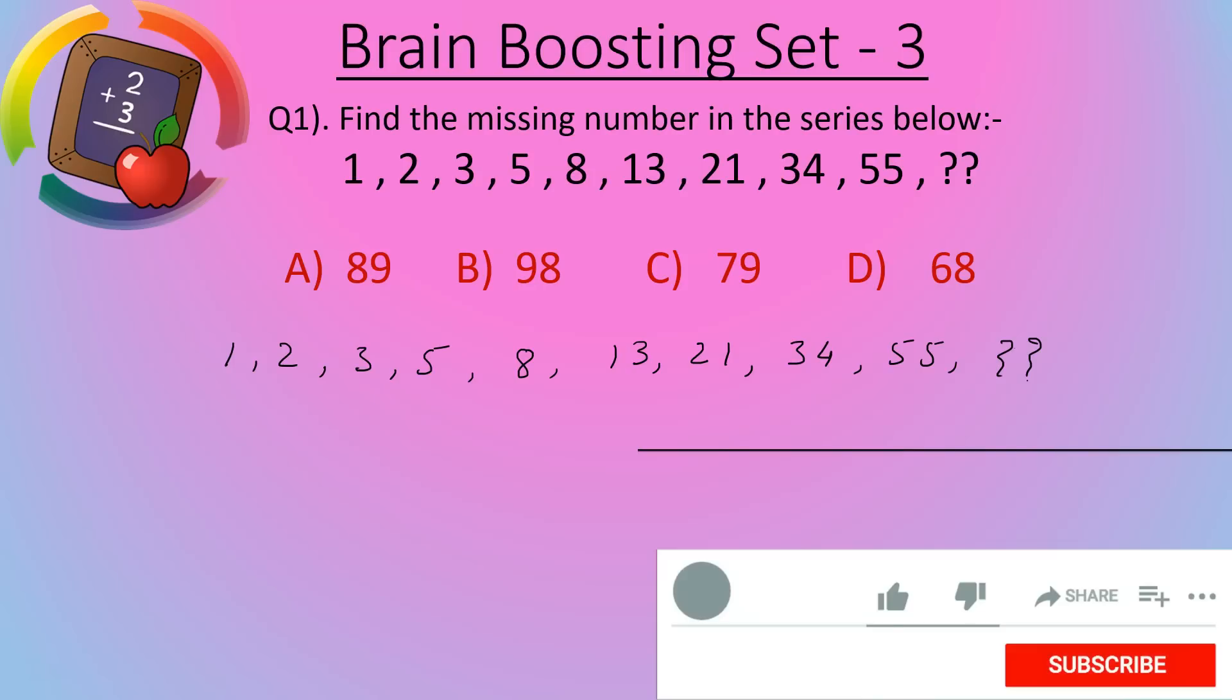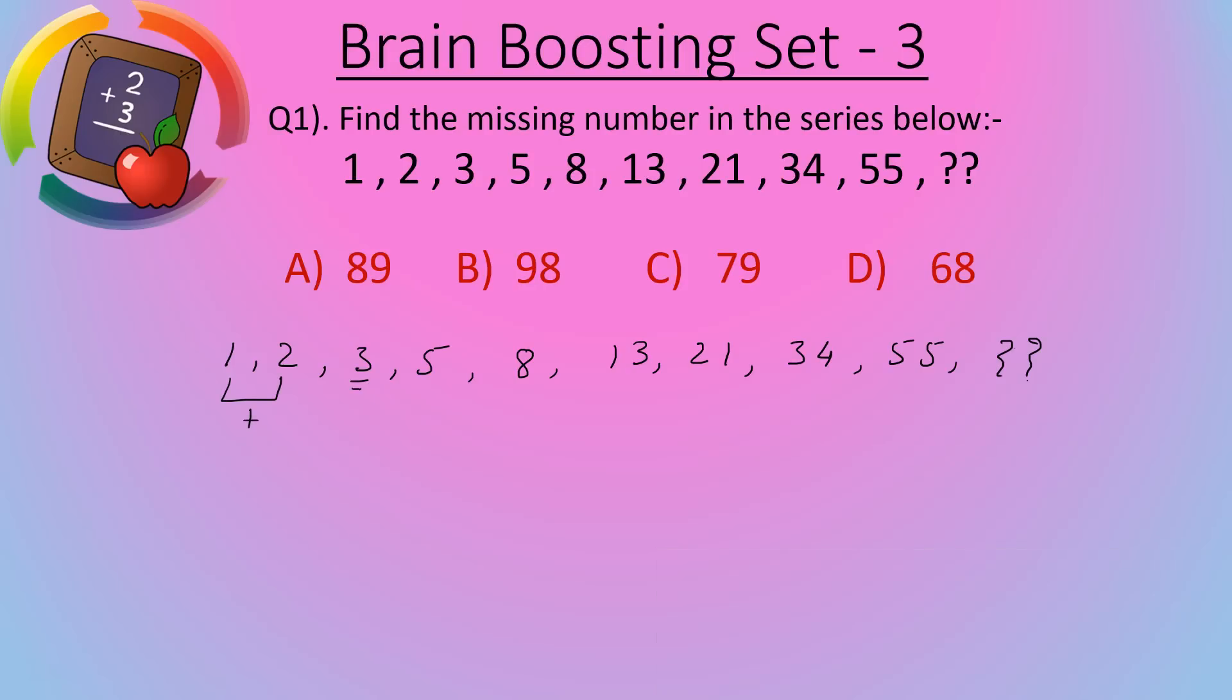So here in this series, when we add 1 plus 2 we get 3. When we add 2 plus 3 we get 5. It means when we add 2 digits we get the next. 1 plus 2 equals 3, 2 plus 3 equals 5. Now 3 plus 5 equals 8. 5 plus 8 equals 13.